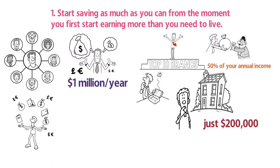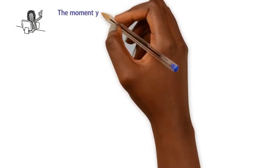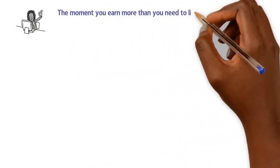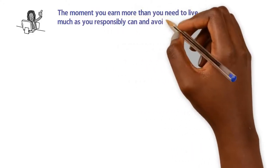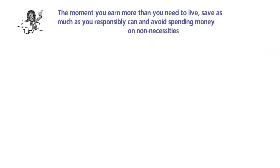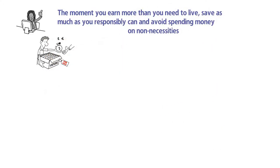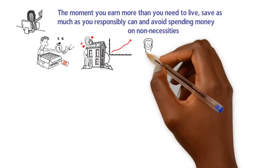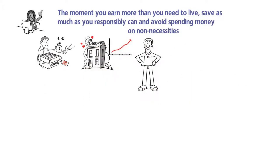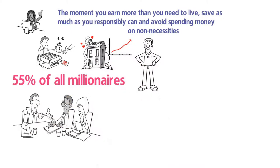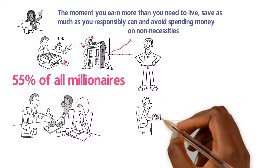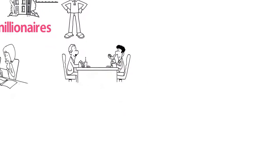But if you truly want to be a millionaire, you never even have to earn near that much. Not with this rule anyways. The moment you earn more than you need to live, save as much as you responsibly can and avoid spending money on non-necessities. Having a good budget and living a frugal life is really all you need to build wealth, especially if you start young. Around 55% of all millionaires credit their wealth to simply being deliberate about their finances and having discipline when it comes to saving.